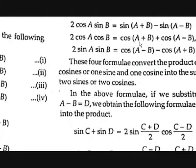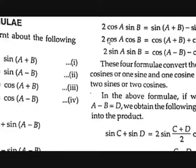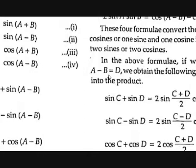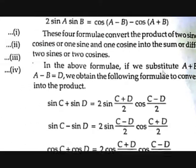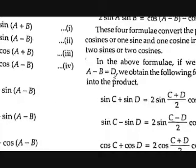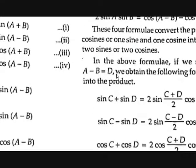With A+B = C and A−B = D, adding them gives C+D = 2A, so A = (C+D)/2. Subtracting gives C−D = 2B, so B = (C−D)/2. This substitution allows us to express A and B in terms of C and D for all four sum-to-product formulas.